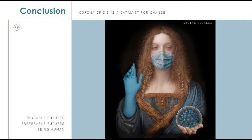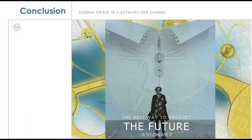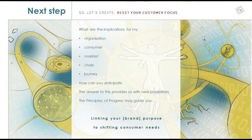The conclusion is that the corona crisis is a catalyst for change which already started long before — some trends were bigger and already at speed. To talk about the future is very difficult. We can talk about probable futures and preferable futures. We know what it means being human. We know where the opportunities lie. We have these three principles of progress. So the best way to predict your future, as well as mine, is to create it yourself. In order to do so, you can ask yourself: what are the implications of this timeframe for my organization, my consumer, my markets, my marketplace, the chain, my ecosystem, and for the journey my customer is making? Is this still analog, or online, or both? How can I reach my consumer? How can I link my purpose to the sign of the times and find relevance to this situation?